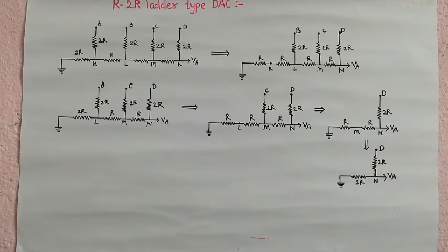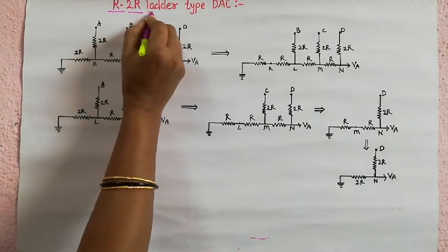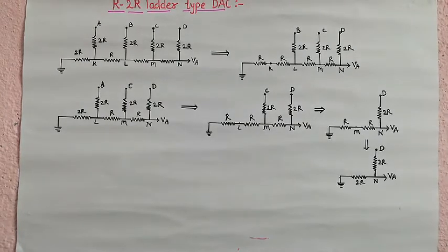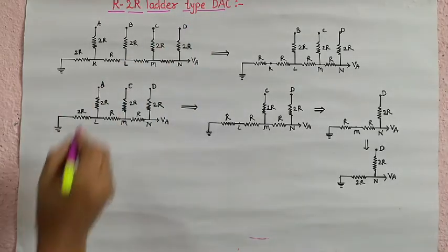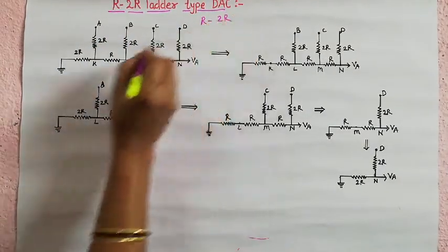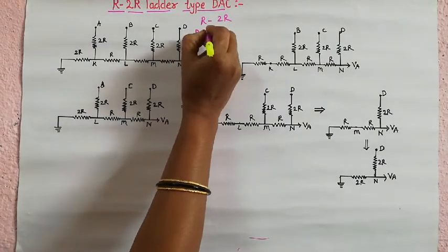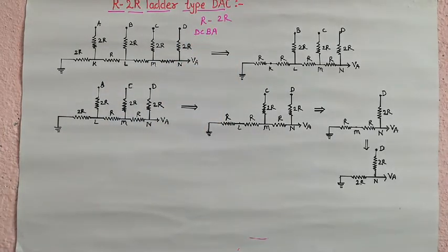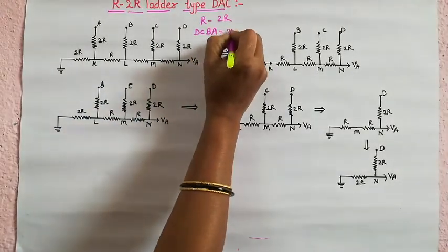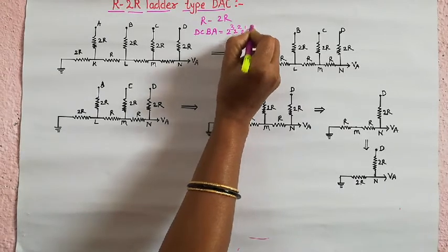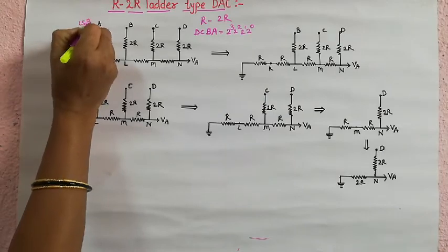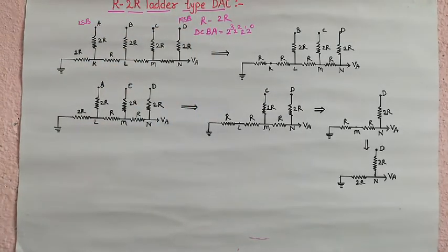In the last lecture we studied the weighted register type of DAC. In this lecture we study the second type of digital-to-analog converter, that is the R2R type of DAC. The name R2R indicates that this DAC uses resistor values of R and 2R. The figure shows the ladder network for a 4-bit DAC. The 4-bit DAC has digital inputs DCBA, where A is the LSB with weight 2⁻³ and D is the MSB with weight 2⁰.